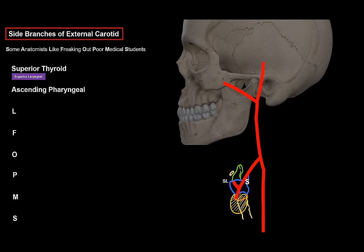Next is the ascending pharyngeal, the only side branch of the external carotid that leaves towards the medial side. It ascends along the medial side of the external carotid along the pharynx, then enters through the jugular foramen to the posterior cranial cavity as the posterior meningeal artery. It supplies the pharynx and pharyngeal constrictor muscles, the posterior meninges, and also gives off the inferior tympanic artery supplying the tympanic cavity — the middle ear where the ossicles are.